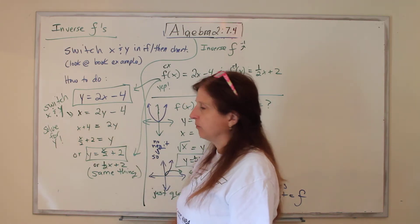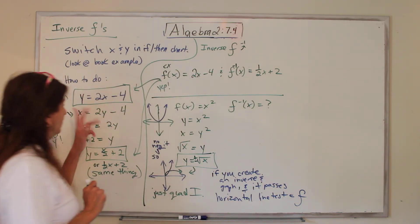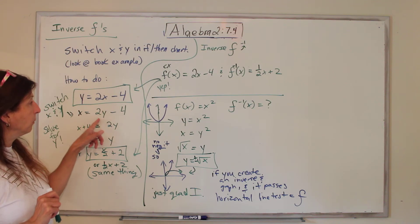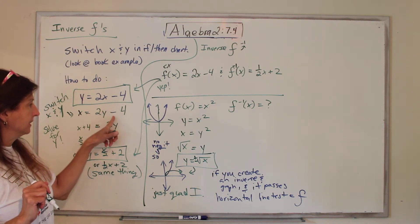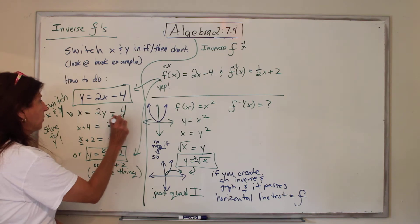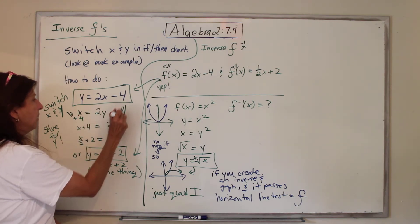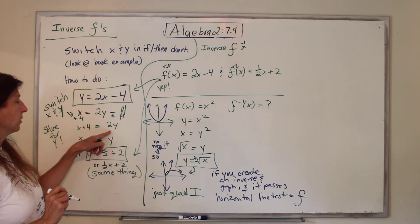Step 3, solve for Y. So you switch them, and then you get your new Y by itself. Y is not alone. It's got a minus 4, so we plus 4 to both sides. Those cancel out. So X plus 4 equals 2Y.